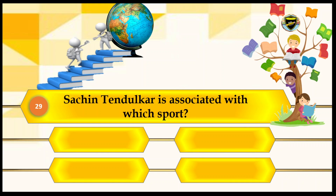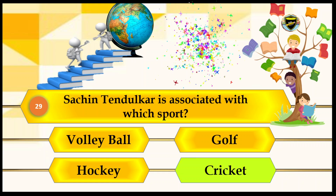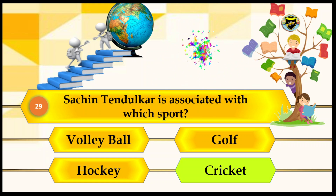Sachin Tendulkar is associated with which sport? Your options are volleyball, golf, hockey, and cricket. The answer is cricket. Let's lock cricket. That's the correct answer — Sachin Tendulkar is associated with cricket.